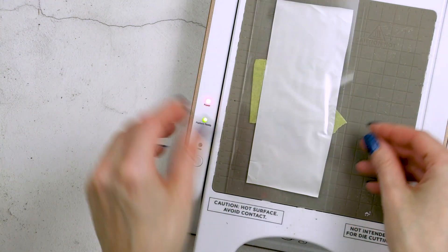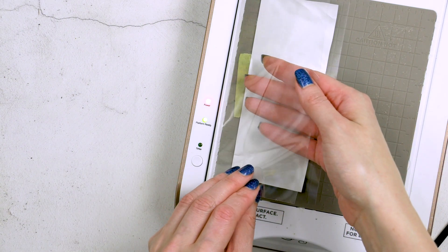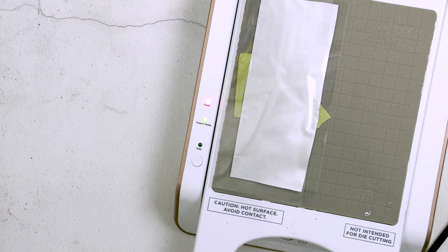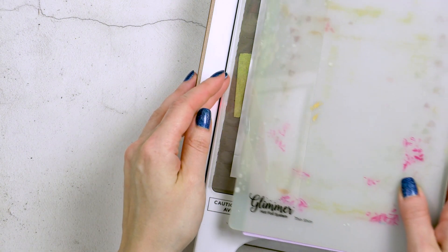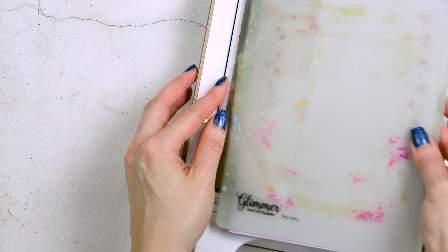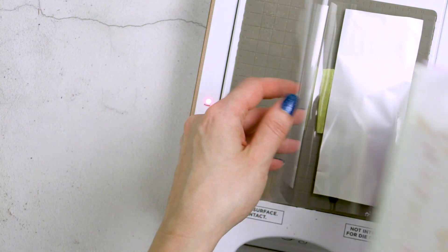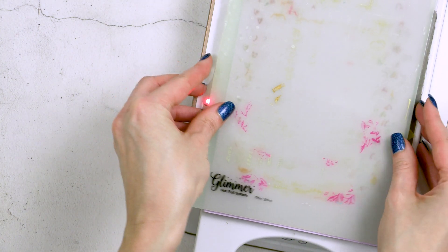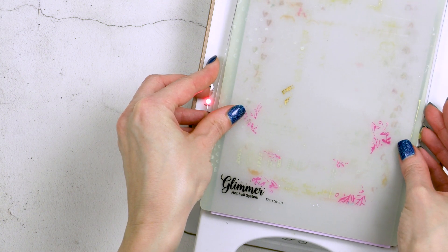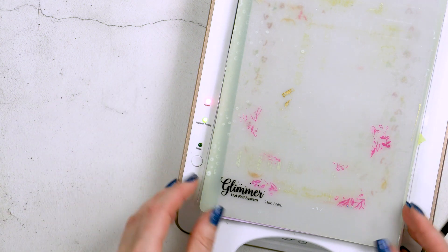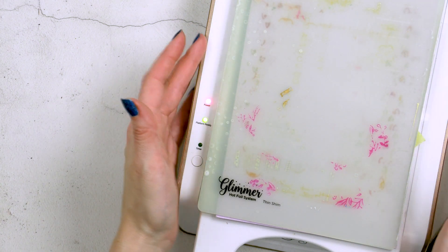Next, I already have my glimmer hot foil system hot and ready to go. I had it off to the side on another desk. I had it on for a couple of minutes so the second light has already turned green and that means that I can begin my foiling process. Now because I have a card base here, I need to make sure I open the card base so that I don't have too much pressure and so that I don't have any weird transfer or indentations or embossing onto the back of my card base.